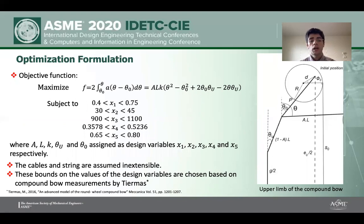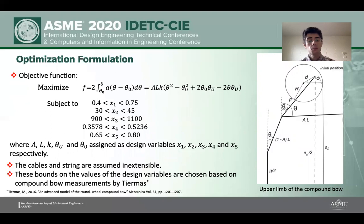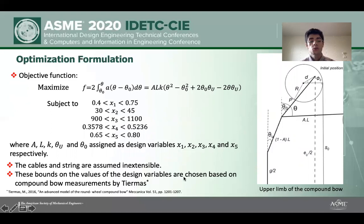In these equations, we have five design variables. A is the ratio between the length of the limb elastic portion with respect to the limb total length. L is the limb length, and K is the spring constant of the elastic portion of the limb. The angles theta_U and theta_zero represent the initial angle of the initial position of the bow. We assume that cables and the string are inextensible, and the design boundary conditions were chosen based on the initial design by Thiermans.